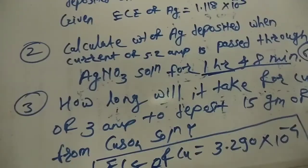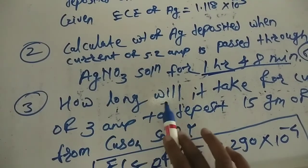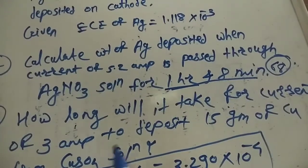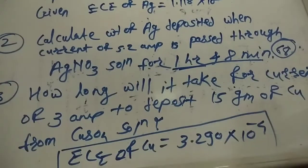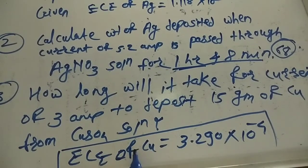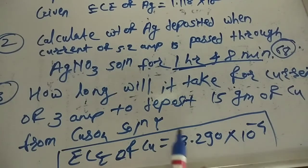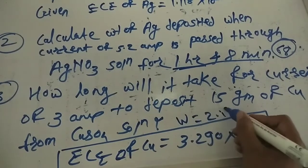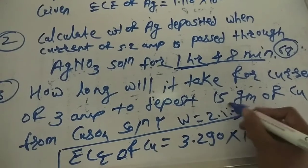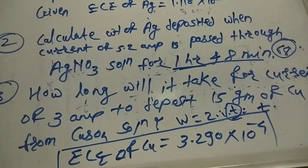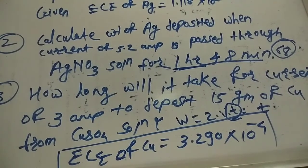The final homework problem: how long will it take for a current of 3 ampere to deposit 15 gram of copper from copper sulphate solution? The electrochemical equivalence of copper is 3.290 × 10⁻⁴. Use W = Z × I × T and find the missing term, which is time. If you have any questions about this topic, please ask in the discussion forum. Thank you.